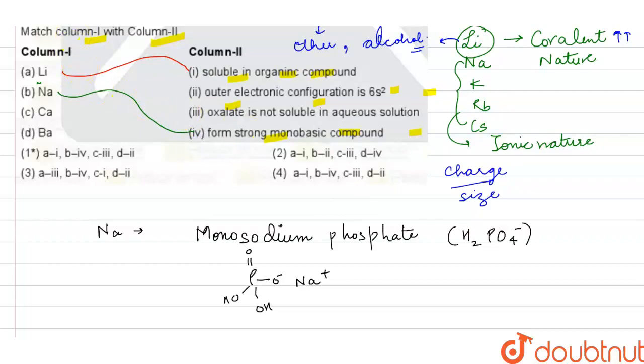If we talk about calcium, calcium forms calcium oxalate CaC2O4. Oxalate is C2O4 2-negative. What happens here? It is not at all soluble in the aqueous solution.